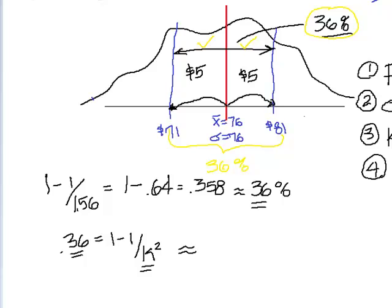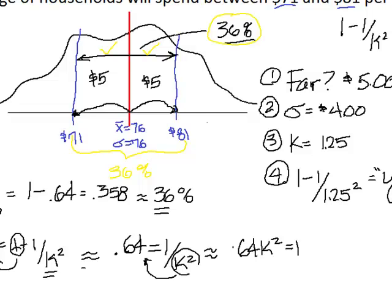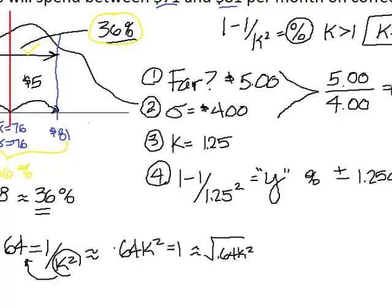And the way that I'm going to solve that is I am going to move my 1 over. Now, I know this makes you guys crazy, but I'm basically just going to ignore the negative sign, because negative isn't a valid value for a standard deviation. So I'm going to say 0.64 equals 1 over K squared. I'm going to move my K squared up, and I'm going to go 0.64 K squared equals 1. I'm going to get rid of that by taking the square root of 0.64 K squared equals 1.